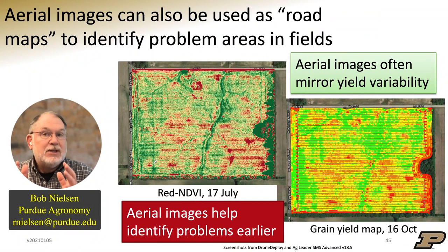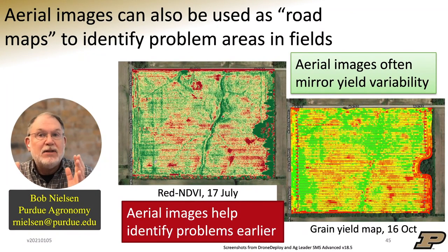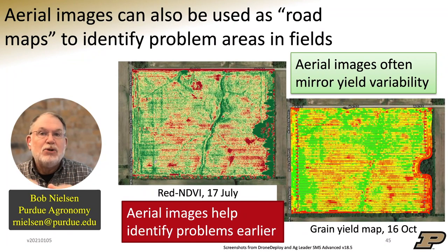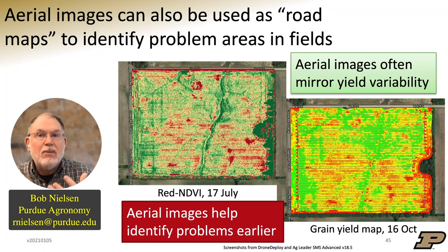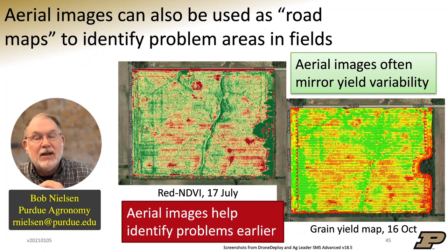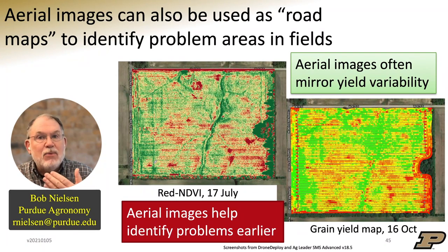Somewhat similar to yield maps is the access to aerial imagery that we have today that we simply didn't have easy access to 20 or 30 years ago. Aerial imagery during the season can also be used as a roadmap to simply tell us where the problem areas are in the field. Most of the time, aerial imagery taken during the season does mirror what we see at the end of the season in the yield map, so it tells us where these same problem areas are.